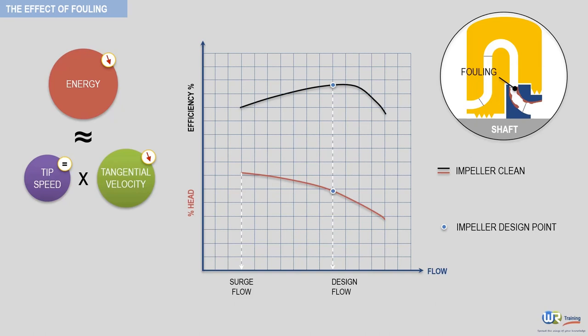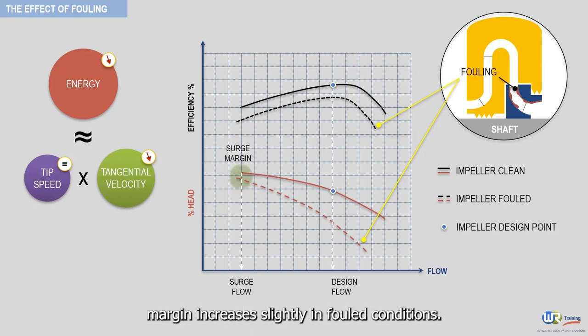It will also reduce impeller head capacity and efficiency as depicted in this graph. Note here that the surge margin increases slightly in fouled conditions.